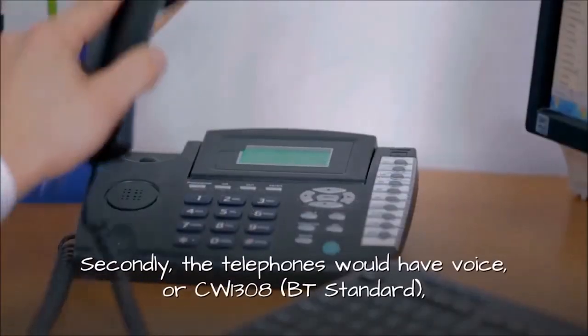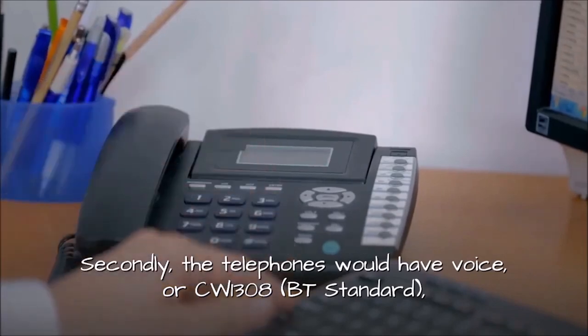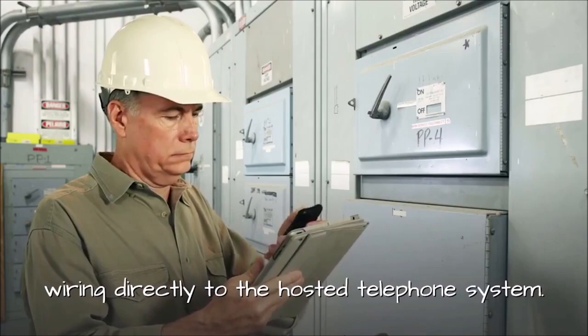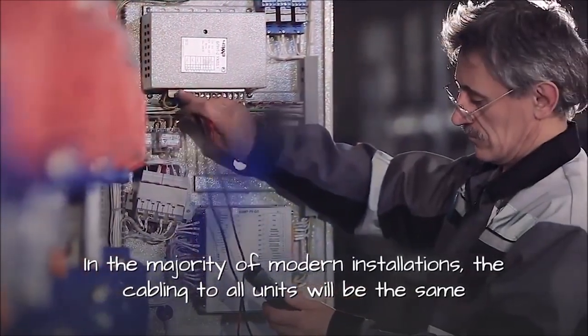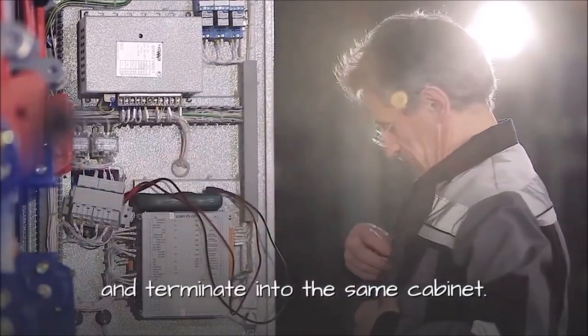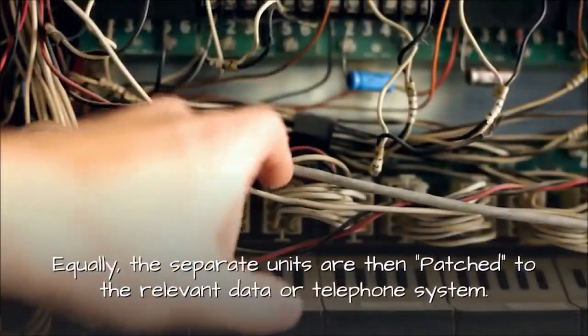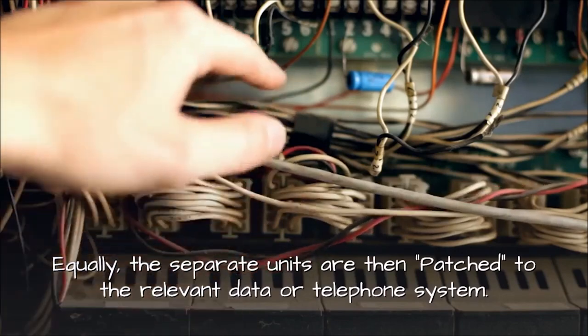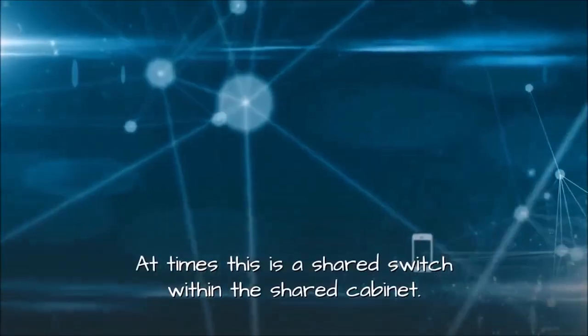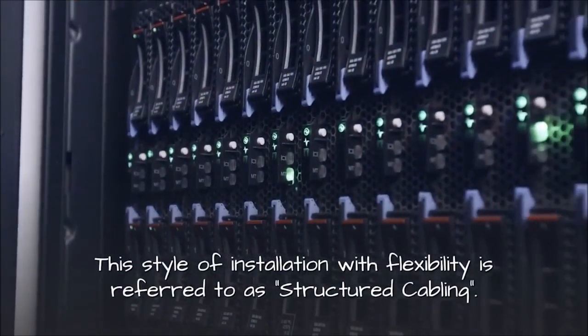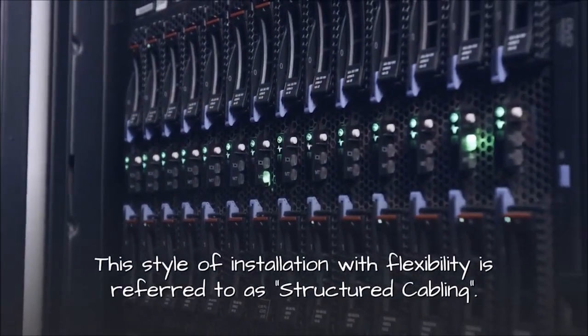Secondly, the telephones would have voice, or CW-1308 BT standard wiring directly to the hosted telephone system. In the majority of modern installations, the cabling to all units will be the same and terminate into the same cabinet. Equally, the separate units are then patched to the relevant data or telephone system. At times this is a shared switch within the shared cabinet. This style of installation with flexibility is referred to as structured cabling.